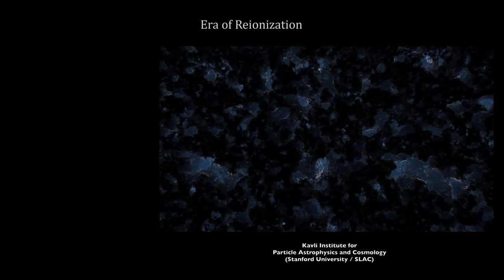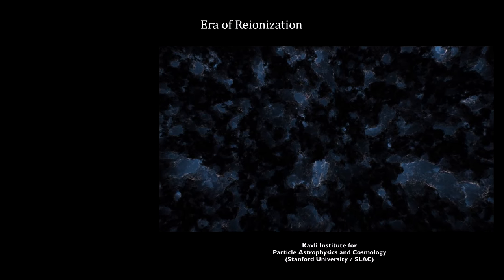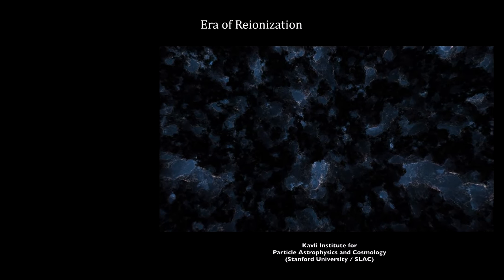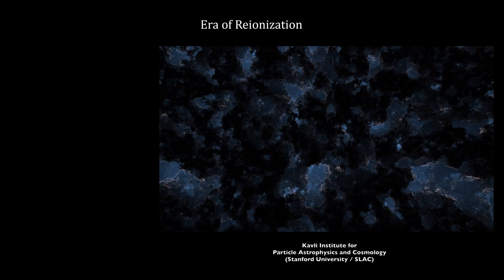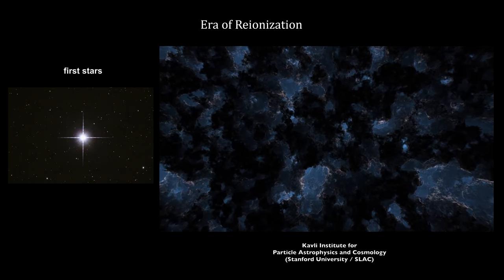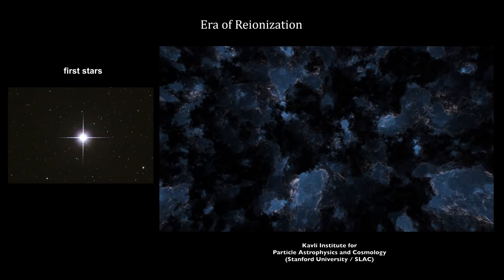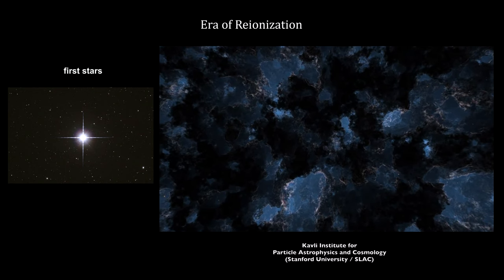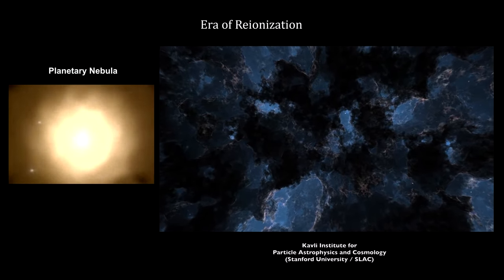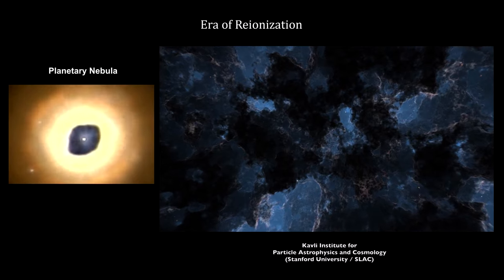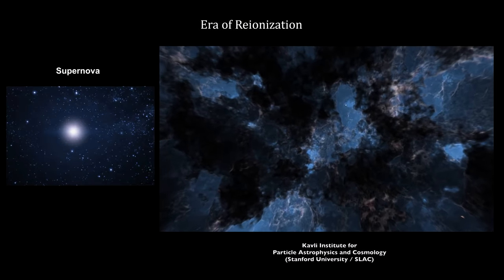Our current understanding about the timeline for reionization is that it started at the end of the Dark Ages, around 150 million years after the Big Bang. At that time, extremely strong ultraviolet radiation was produced, with enough intensity to drive the electrons out of their orbits around protons, across vast volumes of space.